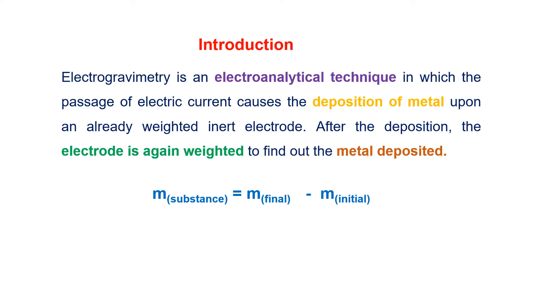Electrogravimetry. In this lecture, we will study the basic introduction of electrogravimetry and instrumentation. This technique is similar to the classical gravimetric methods in which the mass of the sample or the mass of the anode is used for analytical information. Here, electricity will be passed through a solution and after the electrolysis, the solution ions will be reduced and deposited on the surface of the electrode.